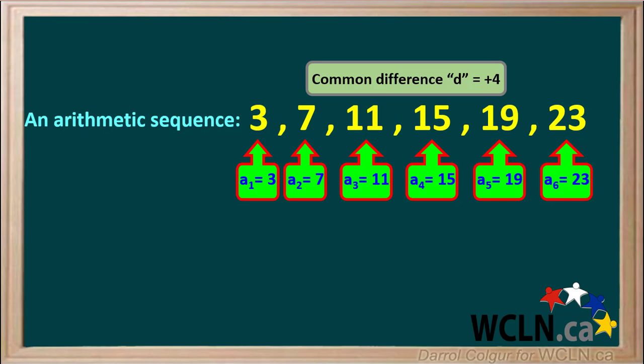So a1 is equal to 3, a2 is equal to 7, a3 is equal to 11, and the last term, a6, has a value of 23.